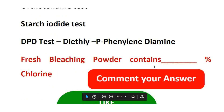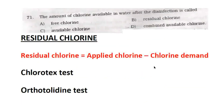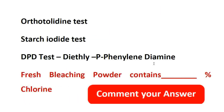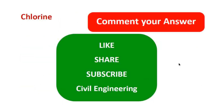Next, bleaching powder is used for chlorination. Its chemical formula is CaOCl₂. The most repeated question is about fresh bleaching powder — it contains a certain percent of chlorine. If you have any answers, please comment. Subscribe and share with your friends. Thank you.